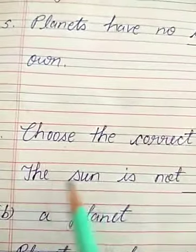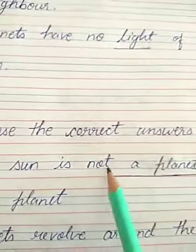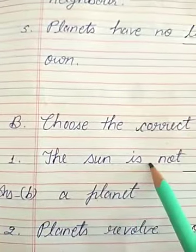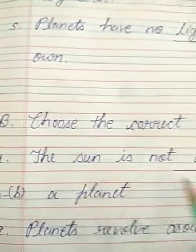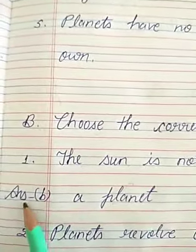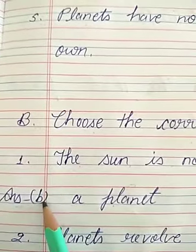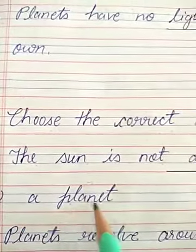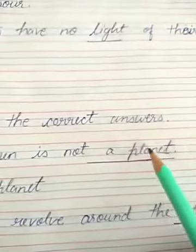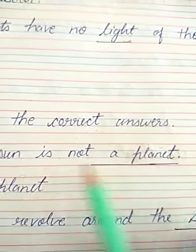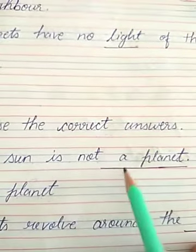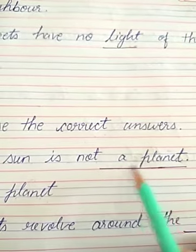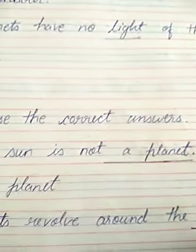Number 1. The sun is not dash. Sun is not a planet. So, write answer Option B — a planet. Sun is not a planet. Write 'a planet' in the dash part, because it's a fill-in or incomplete sentence.